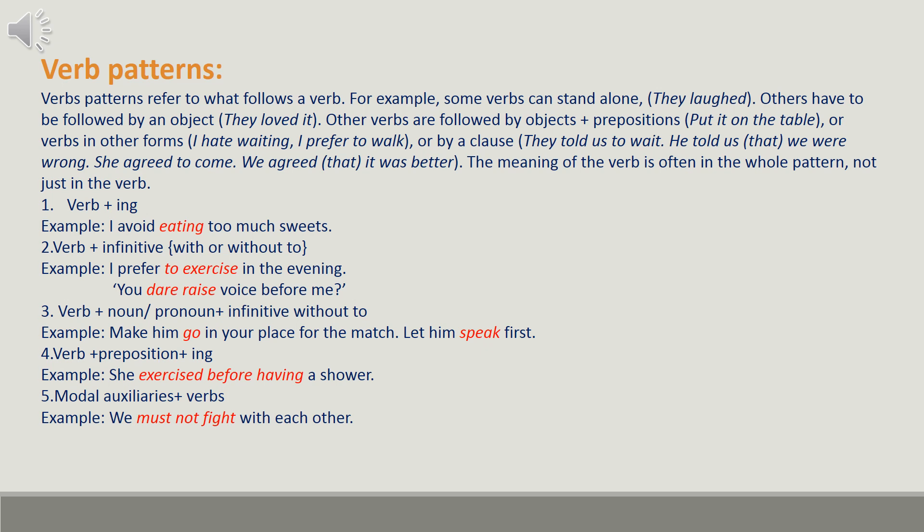The verb patterns are as follows. Pattern 1: verb plus -ing — 'I avoid eating too much sweets.' Pattern 2: verb plus infinitive with or without 'to' — 'I prefer to exercise in the evening,' 'You dare raise your voice before me.' Pattern 3: verb plus noun or pronoun plus infinitive without 'to' — 'Let him speak first,' 'I prefer to make him go in your place.' Pattern 4: verb plus preposition plus -ing — 'She exercised before having a shower.' Pattern 5: modal auxiliaries plus verb — 'We must not fight with each other.'